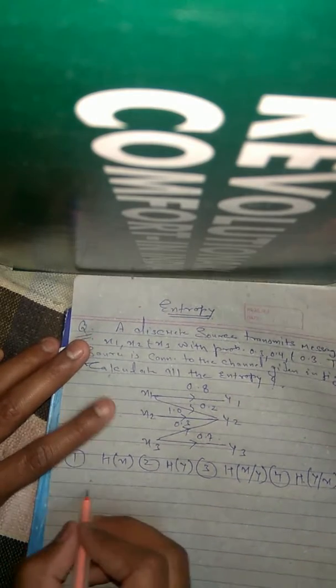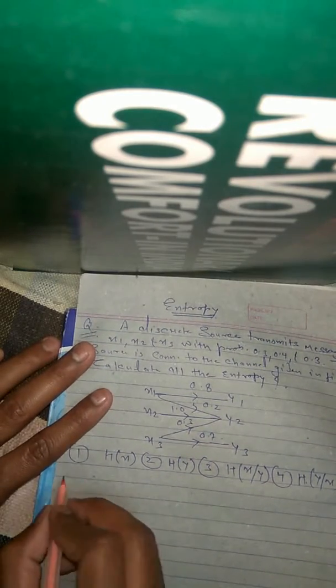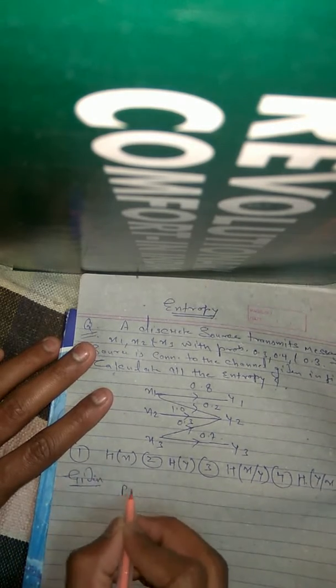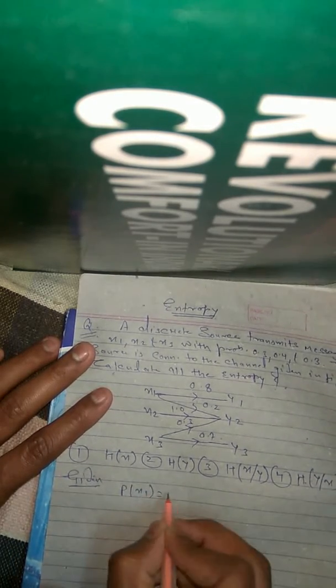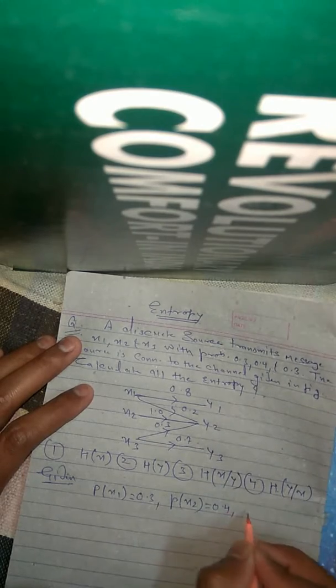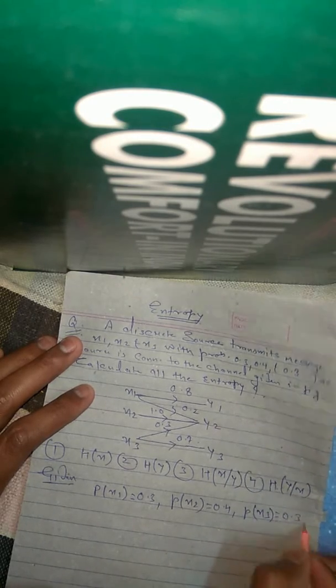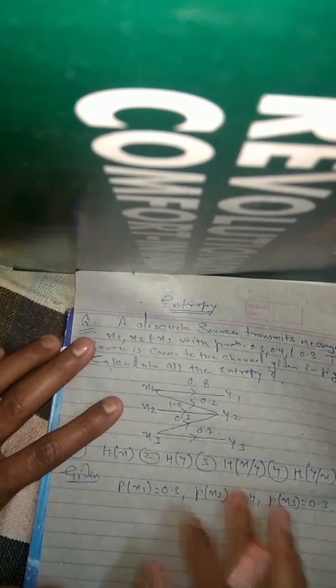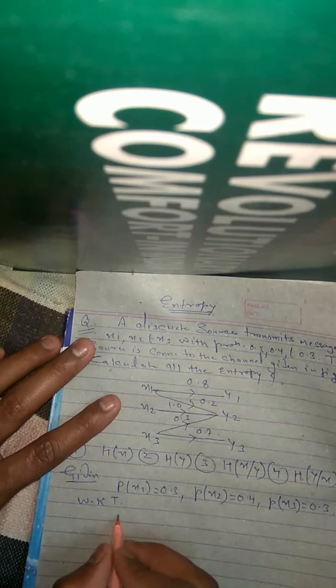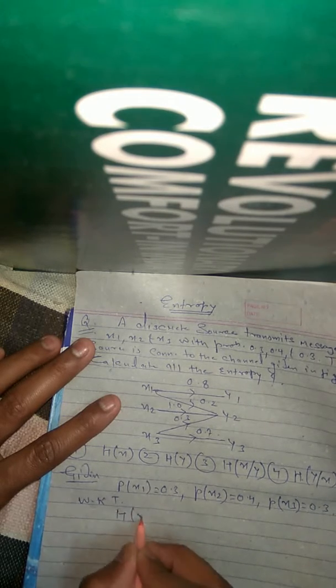From the question, the given probabilities are: P(x1) is equal to 0.3, P(x2) is equal to 0.4, and P(x3) is equal to 0.3. Now we know the formula for entropy H(X).